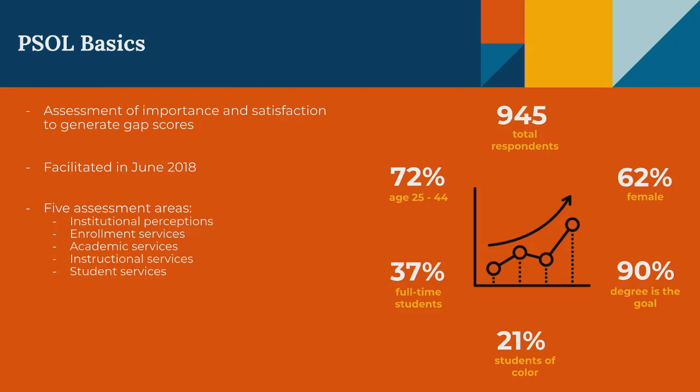This survey looks at five assessment areas: institutional perceptions, enrollment services, academic services, instructional services, and student services. We invited about 8,500 students to participate and had 945 respond — a pretty good response rate. 72% of respondents were between the ages of 25 and 44, which is our expected adult learner population.